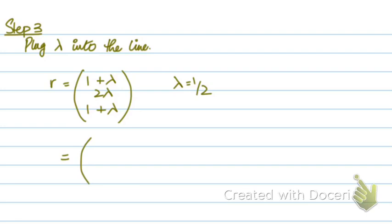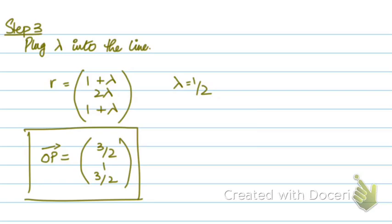So the position vector of the point of intersection of the line will be 1 plus 1 upon 2, so that's 3 upon 2. 2 into 1 upon 2 is 1. Then again, 1 plus 1 upon 2 gives me 3 upon 2. So I'll call this point OP. So OP over here is the point of intersection between the line and the plane.